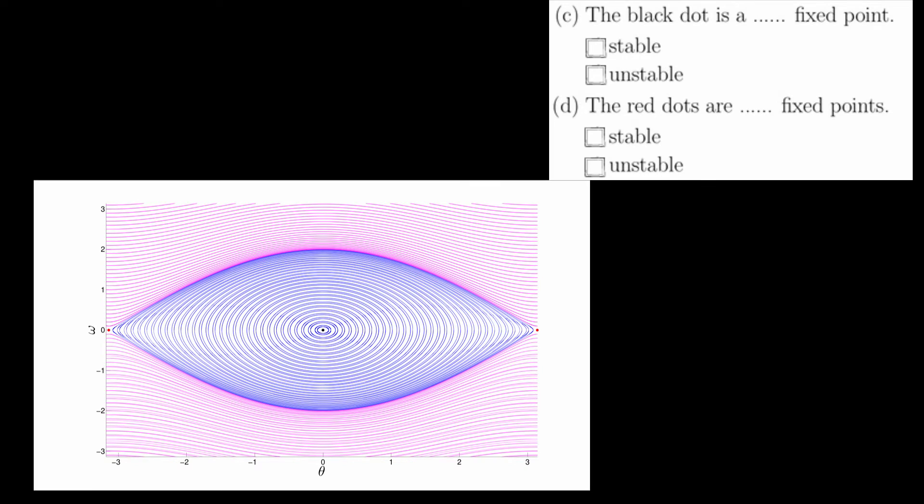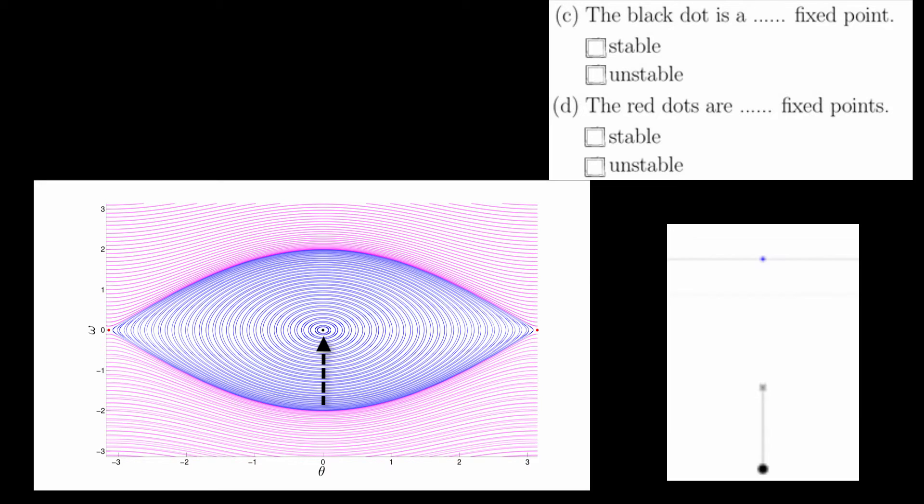Parts c and d ask us to classify the red and black dots as stable or unstable fixed points. The black dot corresponds to a pendulum in this position. Notice that theta is equal to zero, so the pendulum is in the bottom position. And omega is also equal to zero, so the pendulum is not moving. We know from lecture that this fixed point is stable. In the undamped pendulum, this is called an elliptic fixed point. We'll learn much more about this in unit 4.